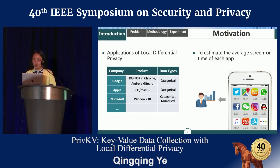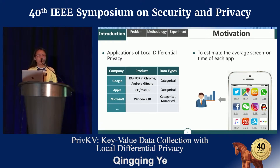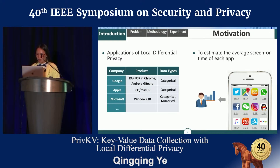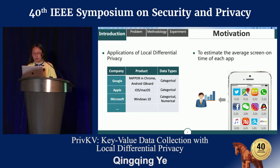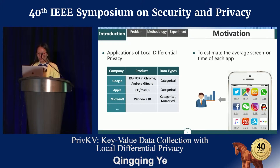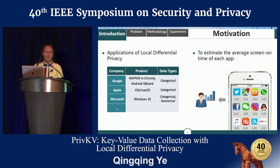LDP is a promising privacy-preserving model. It has been deployed in many real products by several major internet companies for simple data types, such as categorical data or numerical data. Currently, there is no existing LDP solution for key-value data, which is an extremely popular data model. Here is an example to collect app usage data in smartphones, where the key is the app identifier and the value is the screen-on time of each app. To collect this key-value data with LDP, we need to design a new approach.